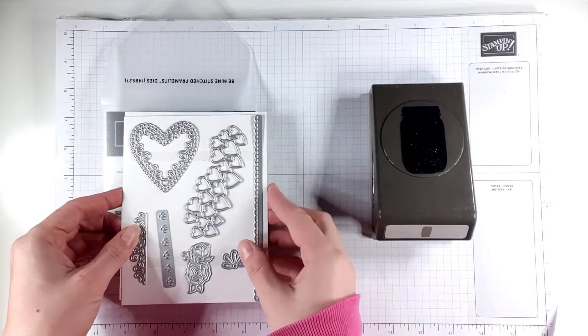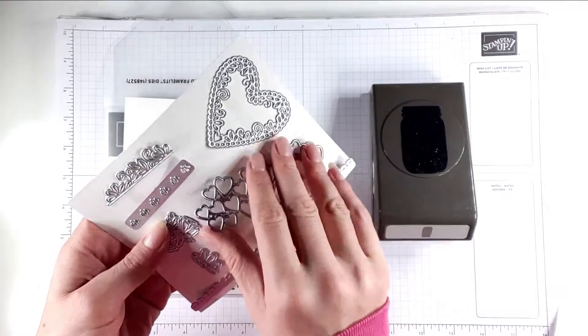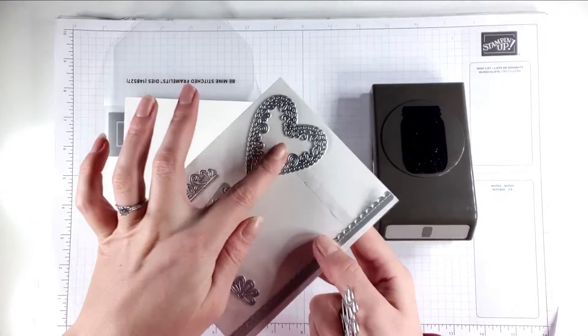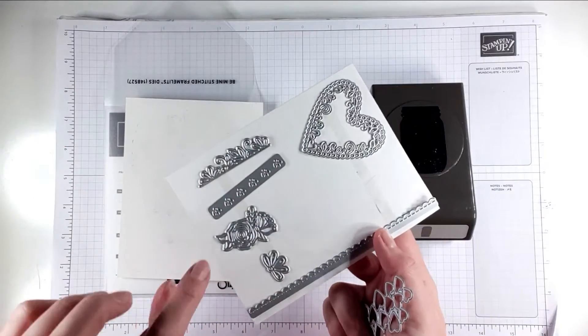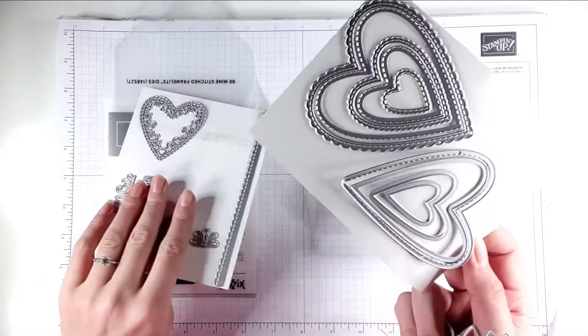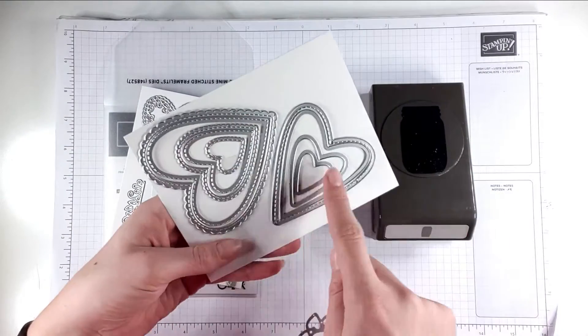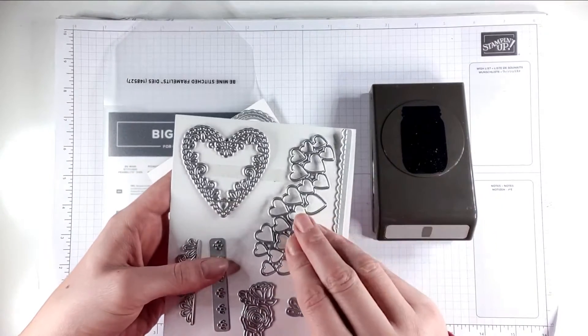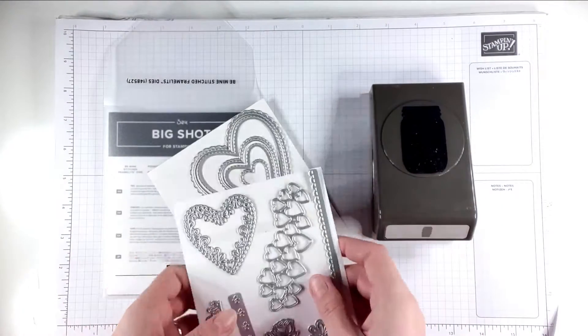We're going to create using the Be Mine Stitched Frame Lick die, so we're going to use this one here. In case you want to see what other dies come in the pack, you get these ones and these ones as well. So you get different sized layering hearts and then you get these ones on the back, but we're just going to be using this one today.